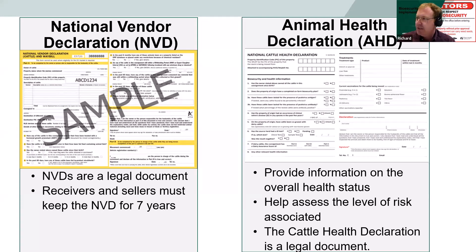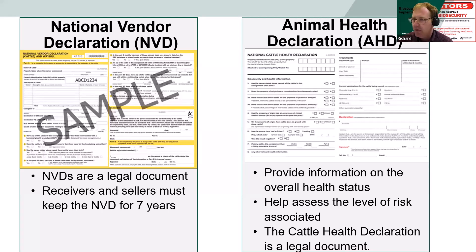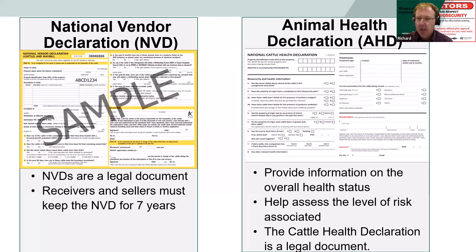Animal health declarations are good because they provide information on animal treatments, your BJD (Johne's disease) score, any treatments they might have had, vaccinations, and anything like that. So they're a very good idea.